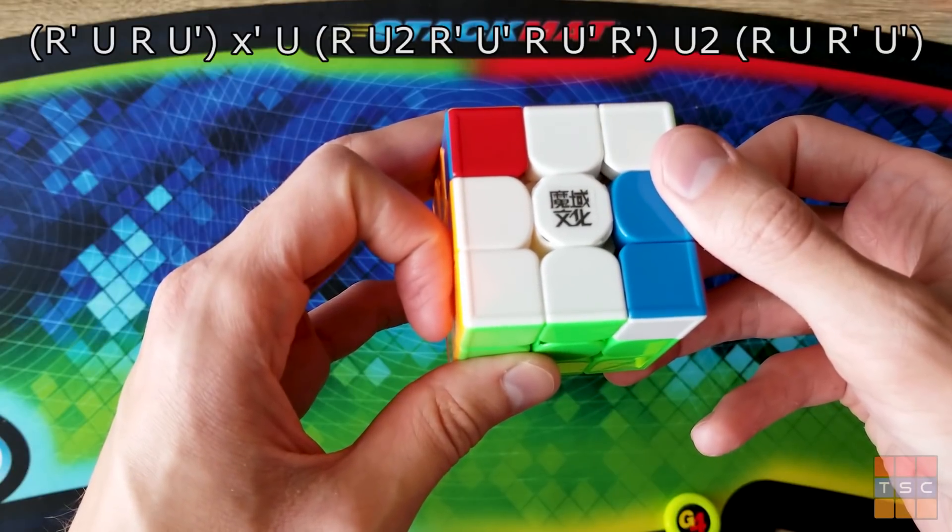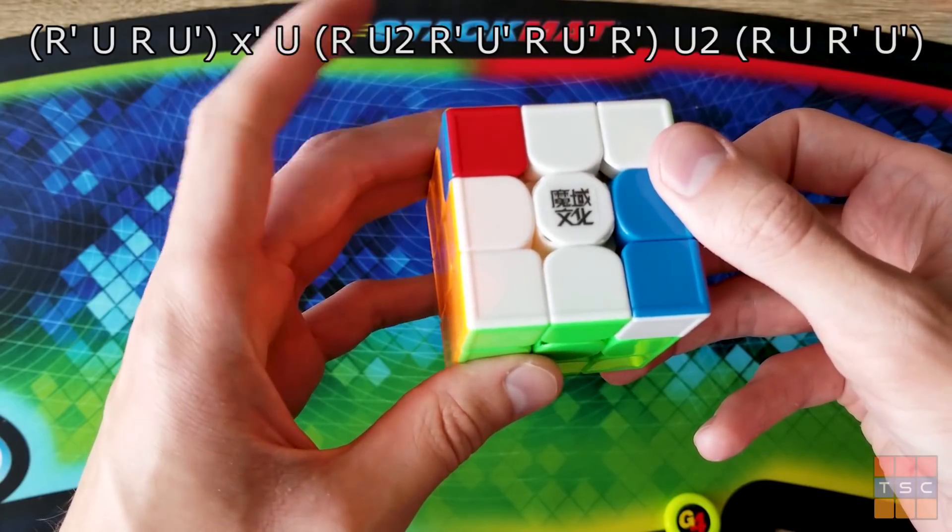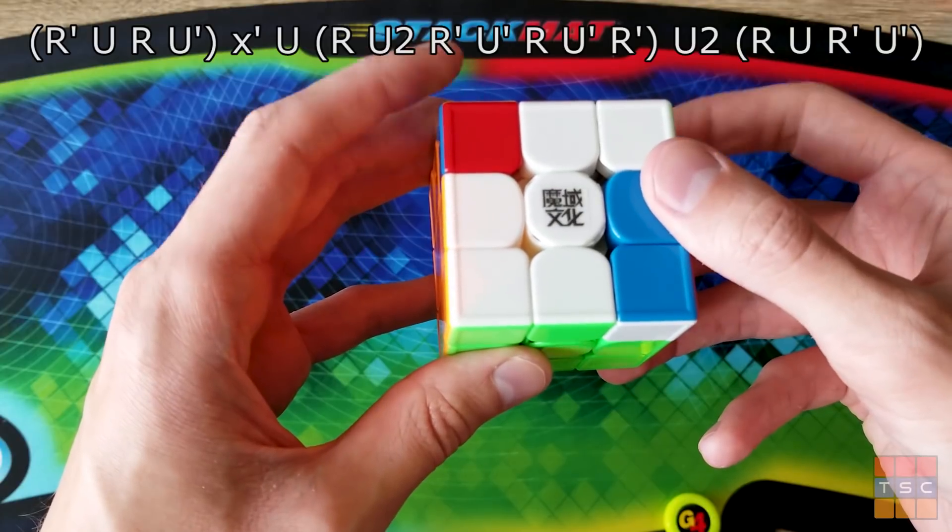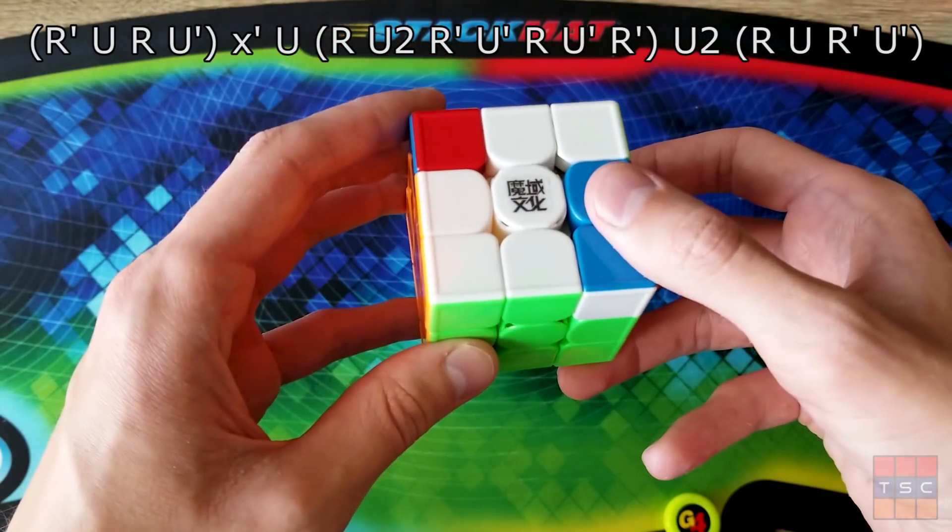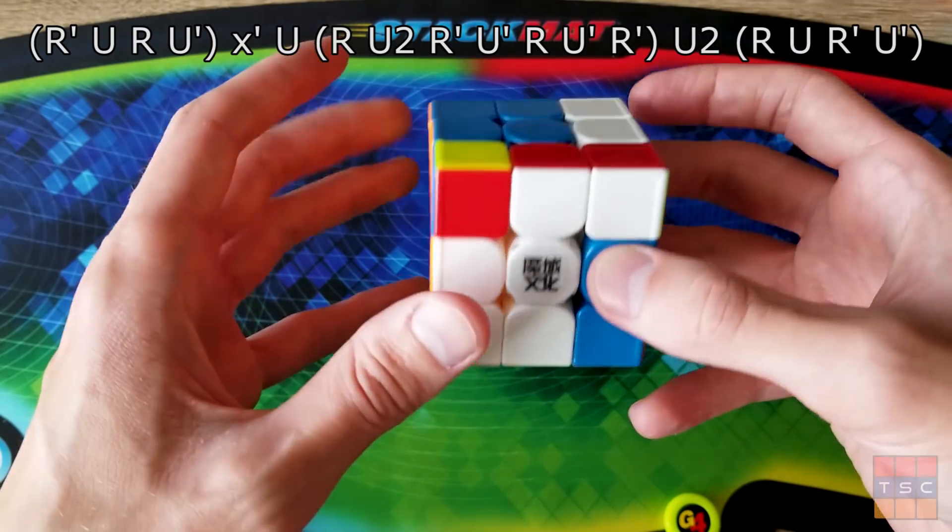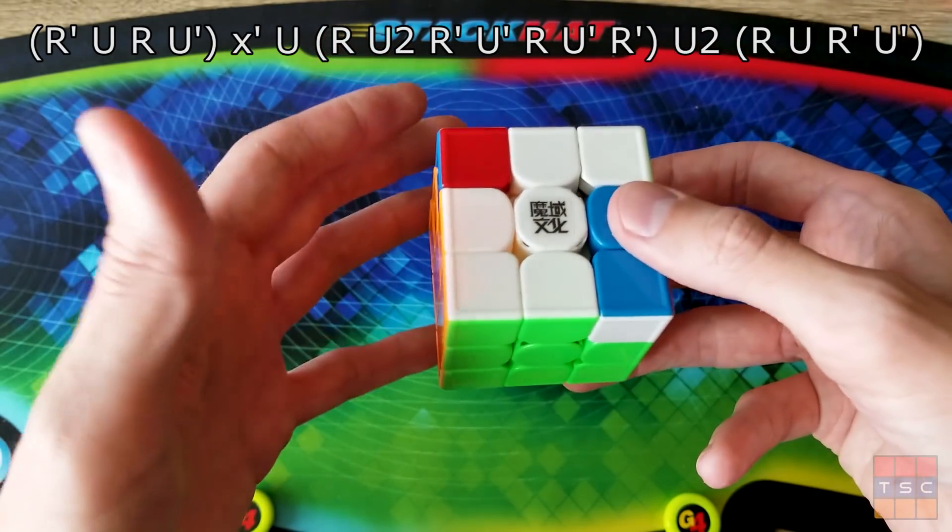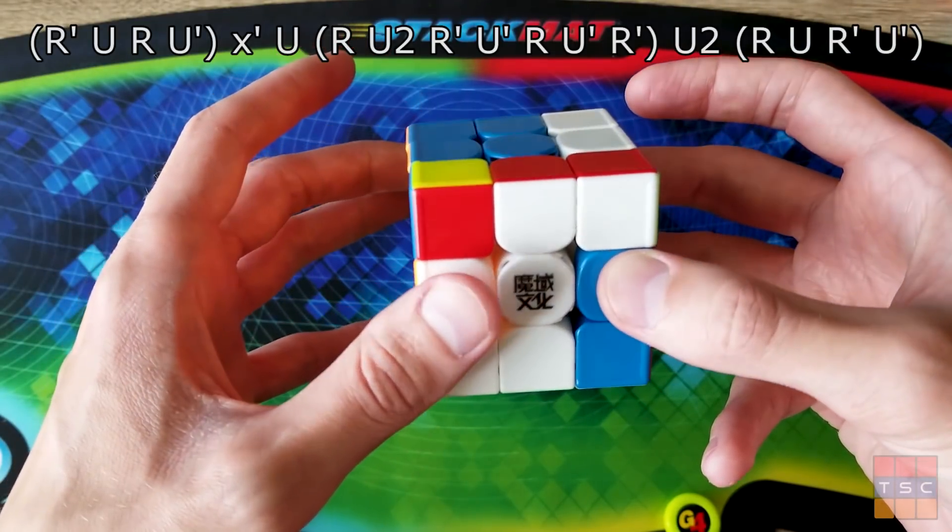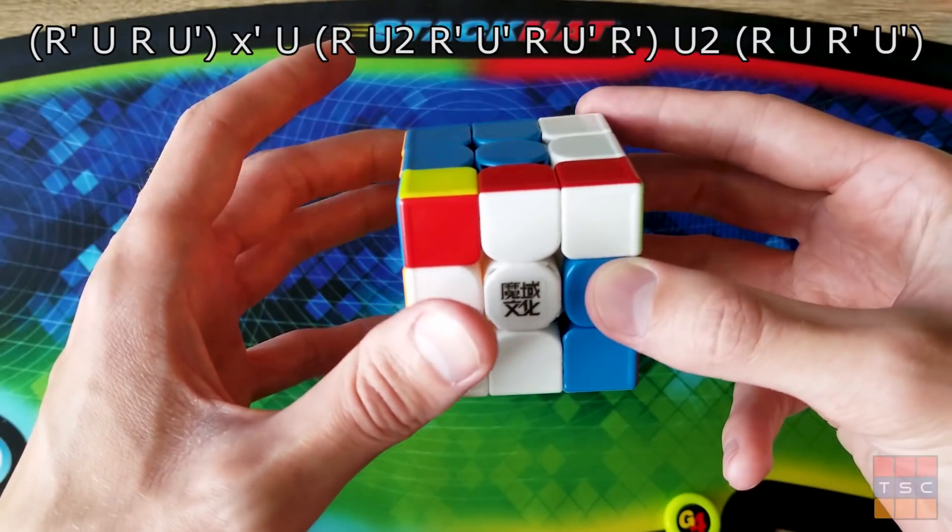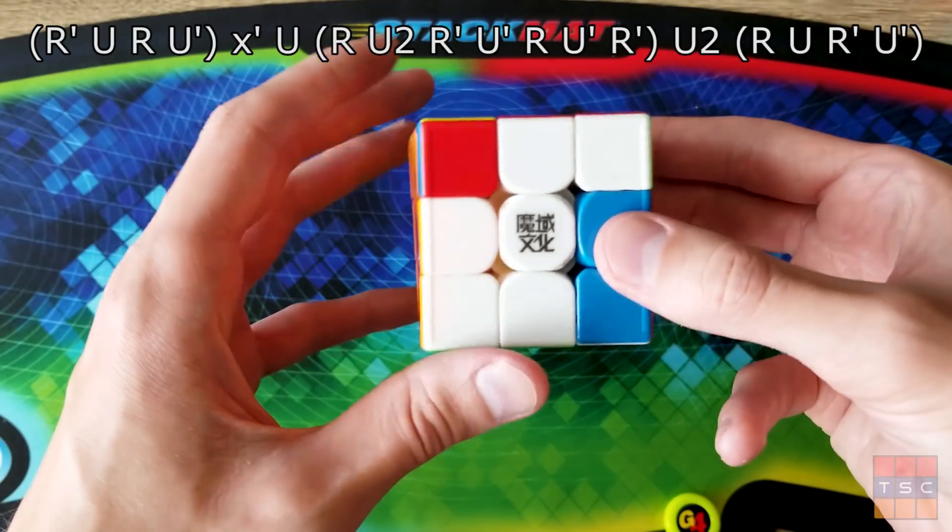And not only that, it also makes it really easy to do this X' rotation. Because now all you're basically doing is re-gripping this left hand and twisting the cube a tiny bit so that it matches your right hand. It barely feels like a rotation at all because your right hand's already in the right position. You're just fixing your left hand. Not only that, but the next move is a U. So while you're doing this with your left hand, you can actually do the U move with your right hand. So we do the X' and U at the same time.